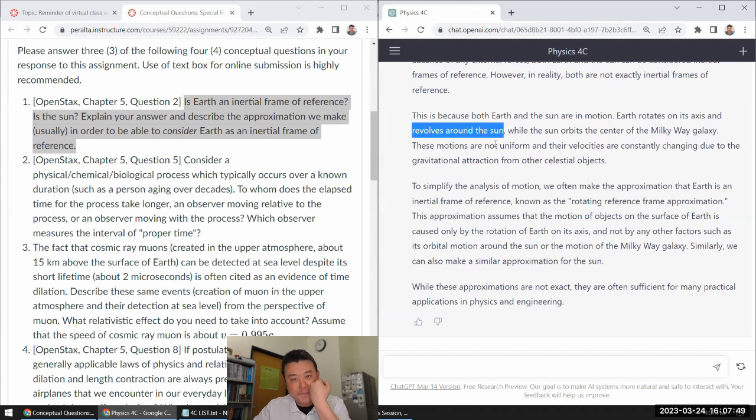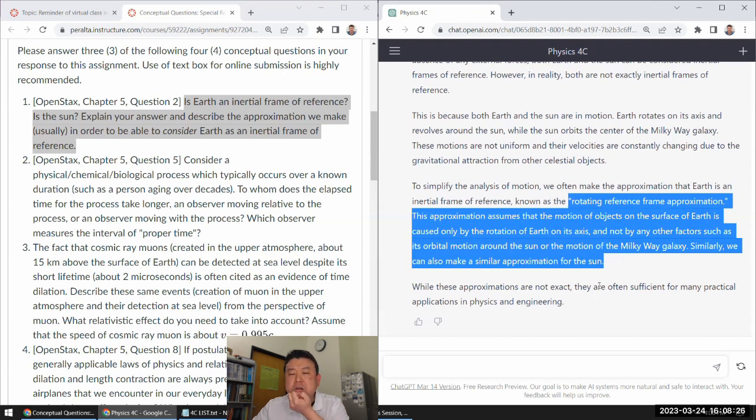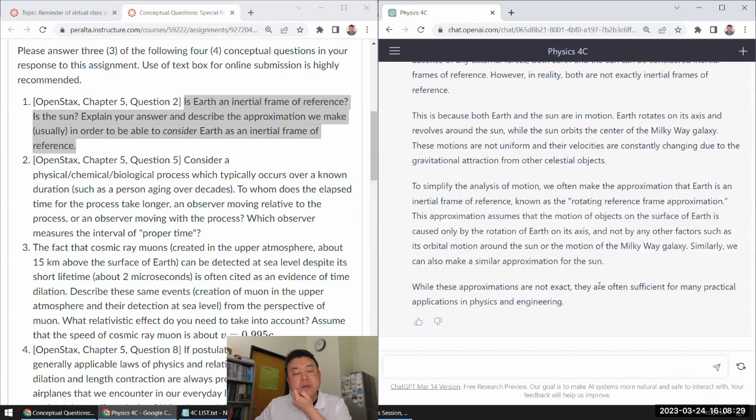It revolves around the Sun, and the Sun orbits the center of the Milky Way galaxy. Yeah, they are not uniform and the velocities are due to... okay, yeah. We hope to make this approximation that Earth is an inertial frame of reference known as rotating reference frame approximation. I don't think I'm familiar with that phrase. Yeah, this is way off.